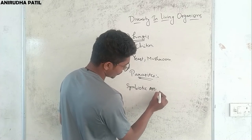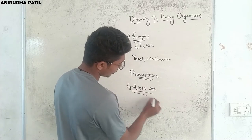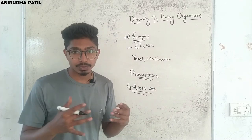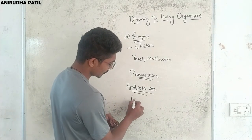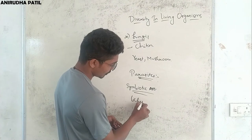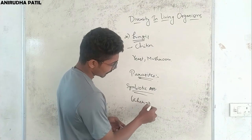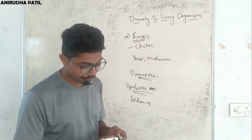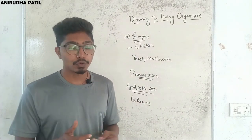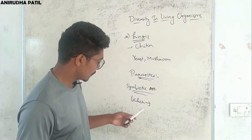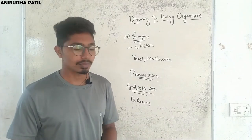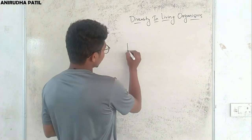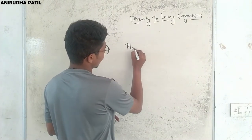In a symbiotic association, organisms live together. An example is lichen, which are also pollution detectors — the more lichen present, the less the pollution. The next kingdom is Plantae.